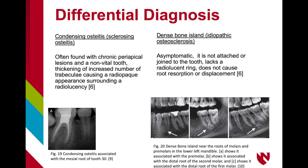Condensing osteitis, also known as sclerosing osteitis, presents with an inflamed or non-vital tooth due to periapical abscess. The radio-opaque area, which is typically centered around the involved root, does not have a radiolucent rim surrounding it. Dense bone island, or idiopathic osteosclerosis, is always asymptomatic and is not fused to the root of the tooth, and there is also no radiolucent rim surrounding this radio-opaque lesion.